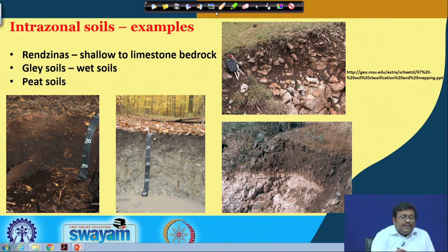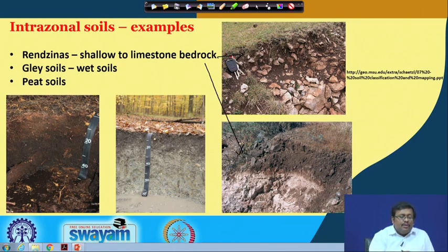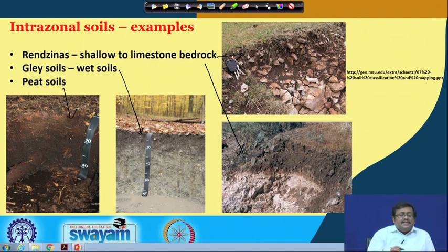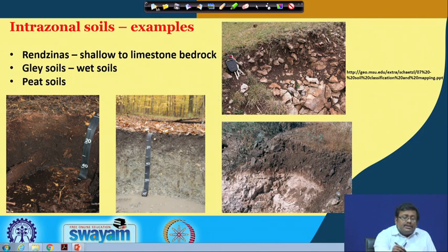Some examples of intrazonal soils: rendzinas are shallow to limestone bedrock soils; gley soils are wet soils where gleying is a property of wetness; and peat soils are organic soils. These intrazonal soils are dominated by local characteristics — rendzinas are dominated by limestone, gley soils by wetness, and peat soils by high organic matter content.